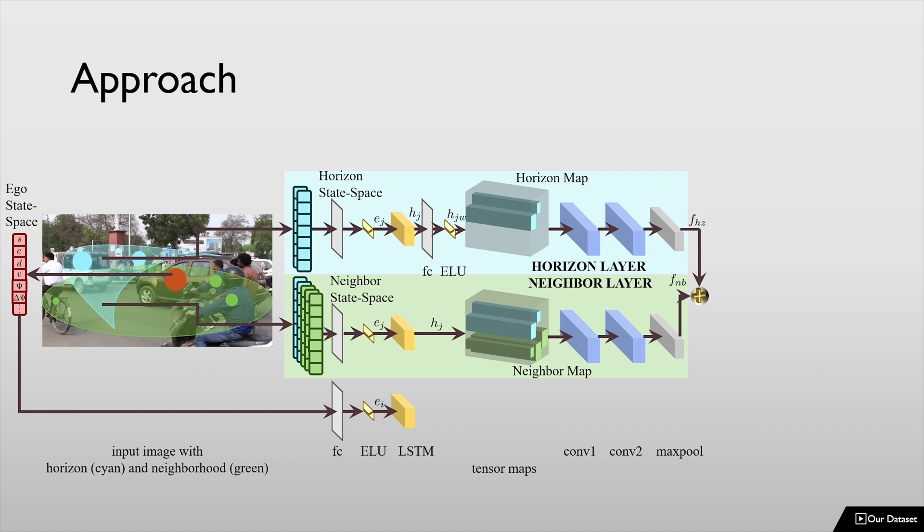The bottom-most layer corresponds to the egocentric vehicle, the input embedding of which passes through the LSTM network to compute its hidden vector. The feature vectors from the horizon and the neighborhood layers are concatenated with the egocentric hidden vector to generate a final vector encoding.